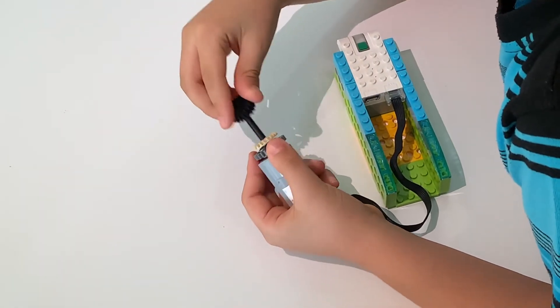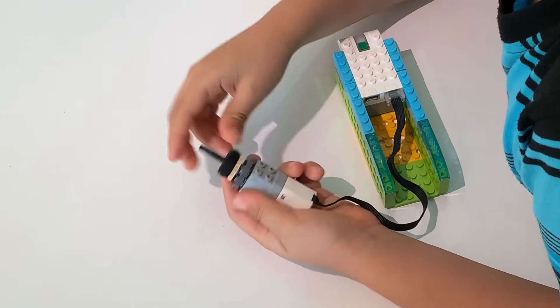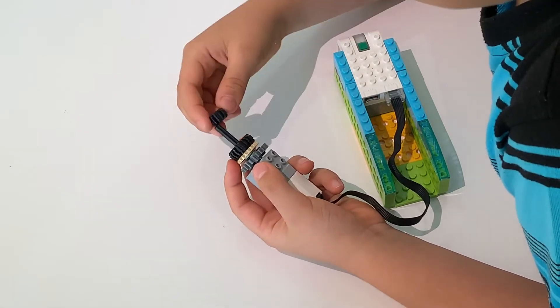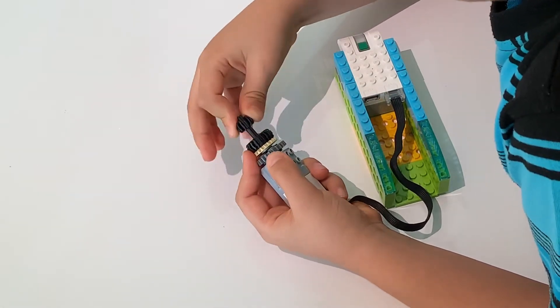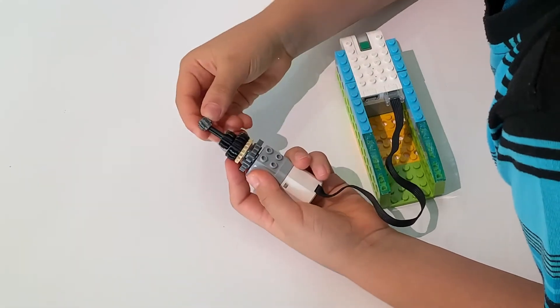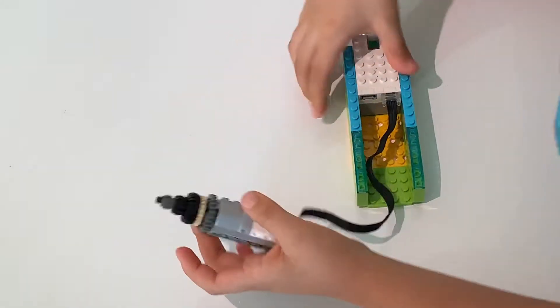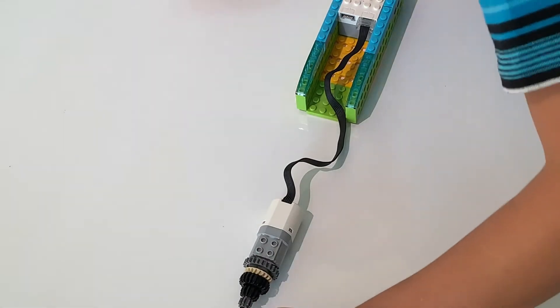This even smaller black cog, put it here. This even smaller black cog, here. And the smallest gray cog, here. We're going to leave that like that for now.